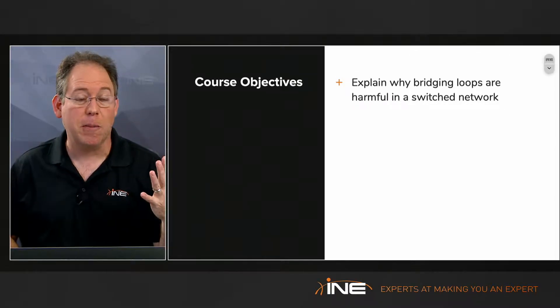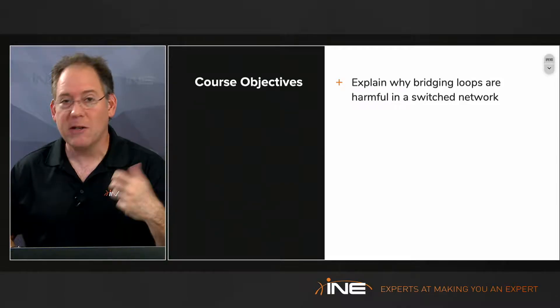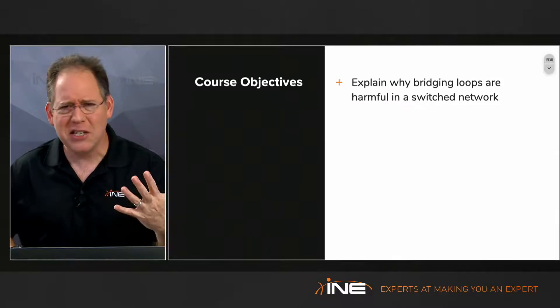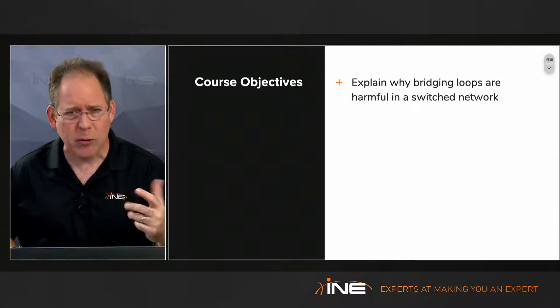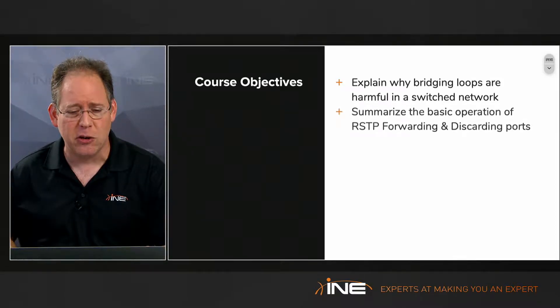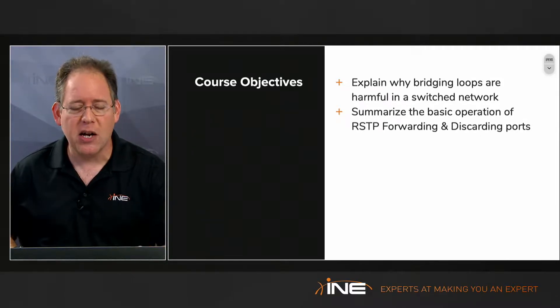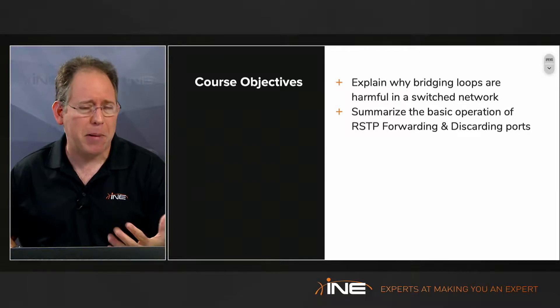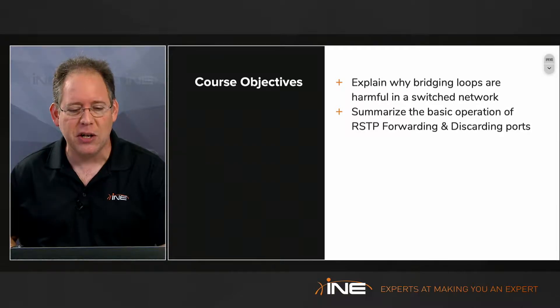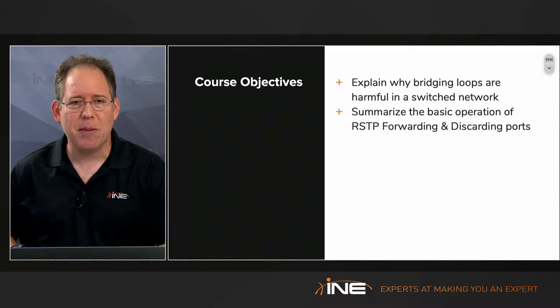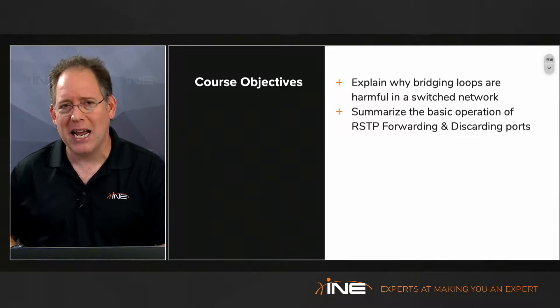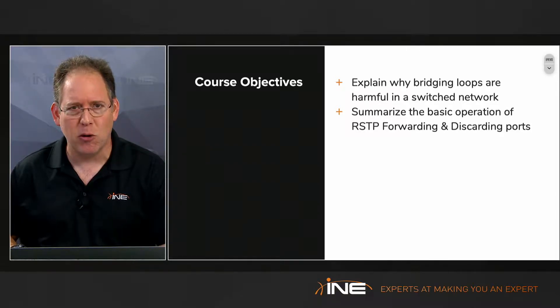You're going to learn starting with the basics: What's a bridging loop? Why is it a bad thing? Why do we need to get rid of bridging loops? We're going to talk about the basic operation of Rapid Spanning Tree — forwarding and designated ports and discarding ports.